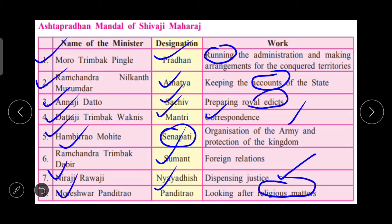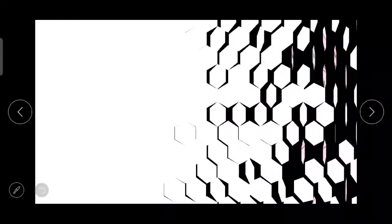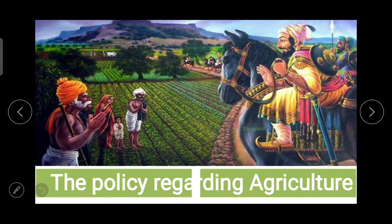The next point is the policy regarding agriculture. Not only in the medieval history of India, but even today, we talk about the policy of Shivaji Maharaj regarding agriculture — in today's democracy also we give the example of Shivaji Maharaj's agricultural policy many times. Agriculture was the main occupation in villages, and as we know our country is totally based on agriculture, so Maharaj knew the importance of agriculture and paid attention to the welfare of the farmers.